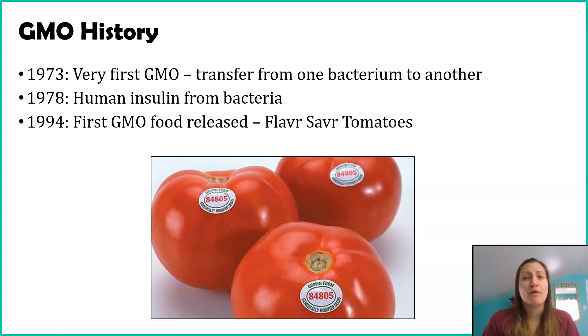The first GMO food item for consumption wasn't until 1994, so only 30 years at this point. This is when the first GMO food was released to the market for direct human consumption. In case you're curious, they were called flavor saver tomatoes. They were designed to give tomatoes a longer shelf life - how long they stay good and edible for consumption at the grocery store.